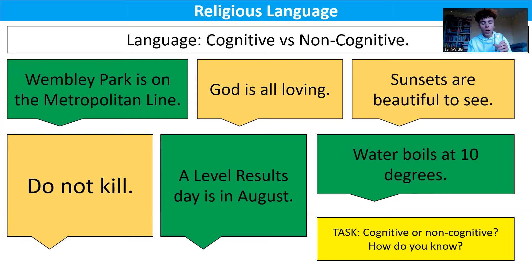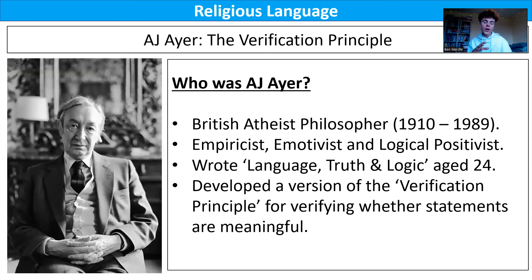Let's look at our first key topic today, which is the verification principle. The main man we need to know about is A.J. Ayer — a British atheist philosopher who was very influential in the 20th century, born in 1910 and dying in 1989. He was an empiricist, an emotivist, and a logical positivist. Emotivism, which you'll know from metaethics, is the idea that all moral judgments and statements are just personal opinions — people are expressing an emotion or a feeling — so there is no objective right or wrong.